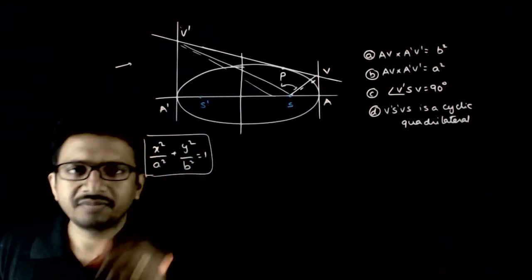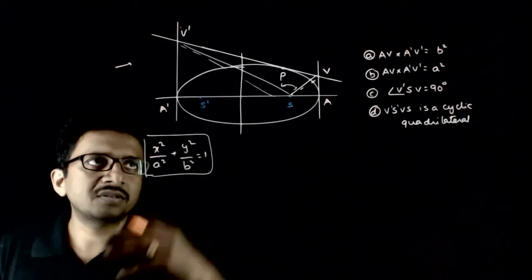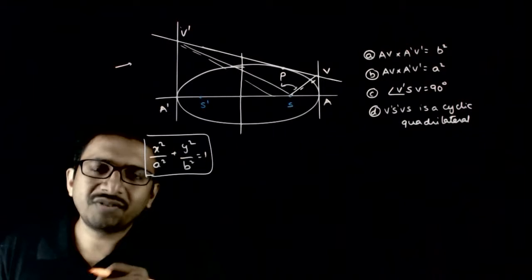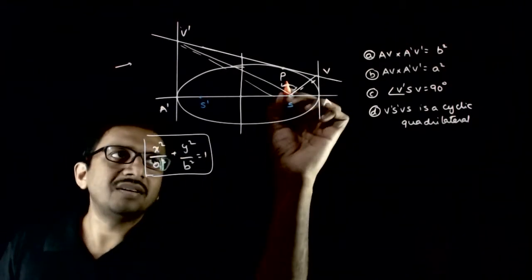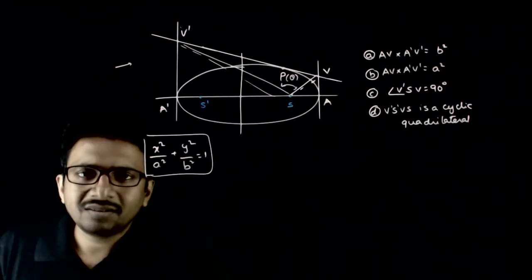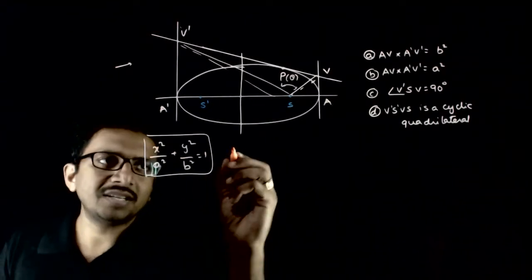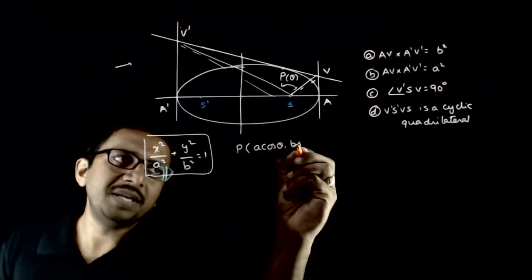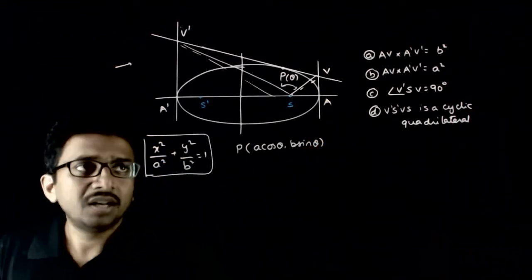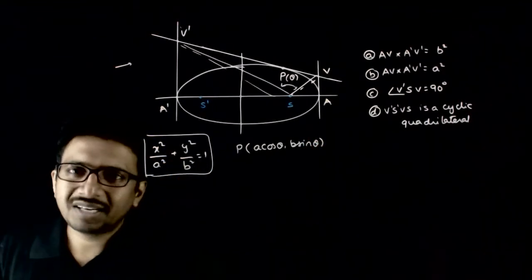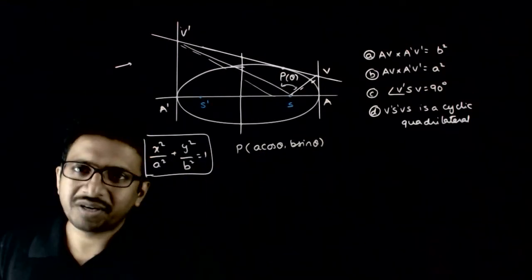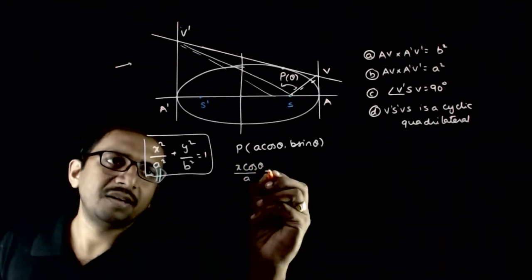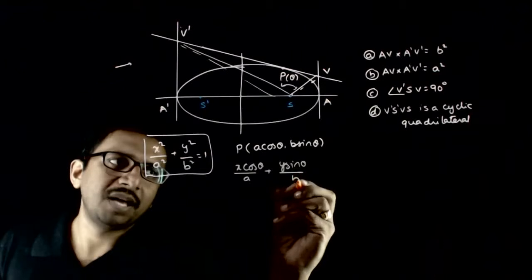Let us start with the mathematical formulation. We assume the point P on this ellipse corresponds to an eccentric angle θ, so P = (a cosθ, b sinθ). We know the equation of the tangent to this ellipse at this point: x cosθ / a + y sinθ / b = 1. This is the equation of line VV dash.